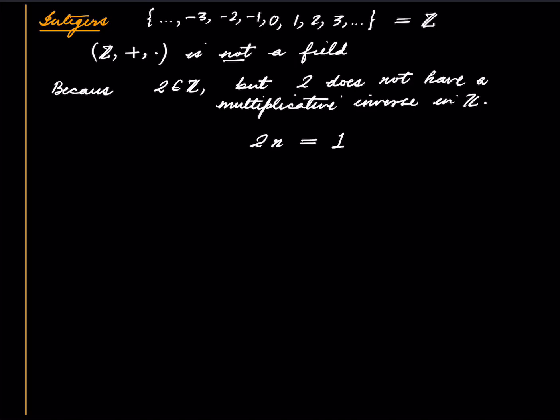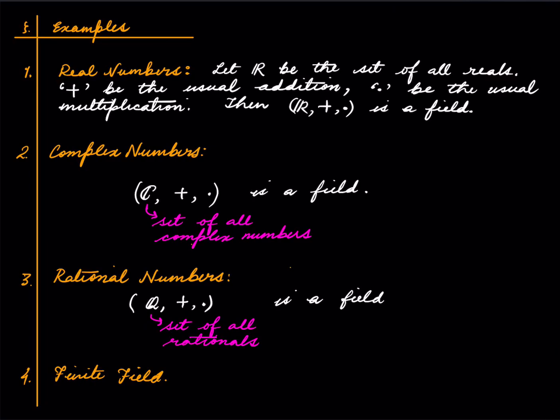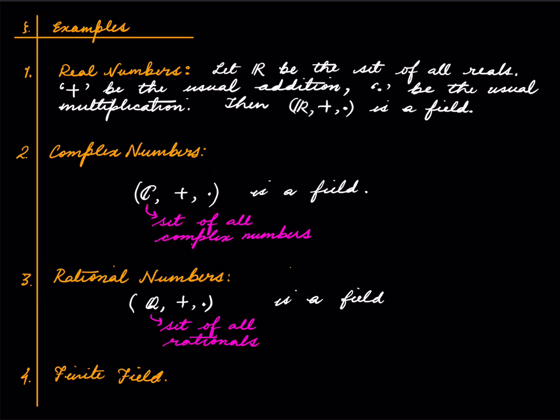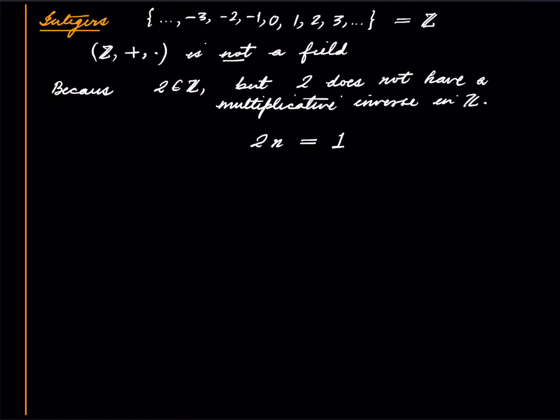So I think this is enough for a first lecture — a lot of definitions. One should keep in mind the examples: these three fields — real, complex, and rational numbers — will be the most important. If you know about finite fields, great; otherwise forget about it. That's the end of this lecture; as usual, like, comment, share, subscribe. I also have a Patreon; the link is in the description below. Thank you for listening, and I'll see you next time.